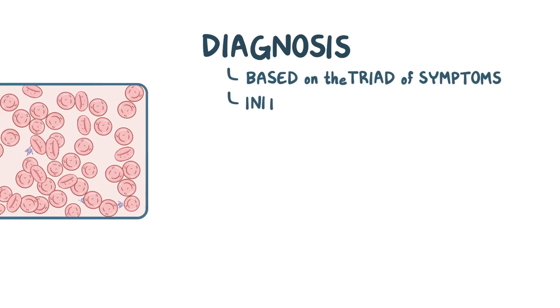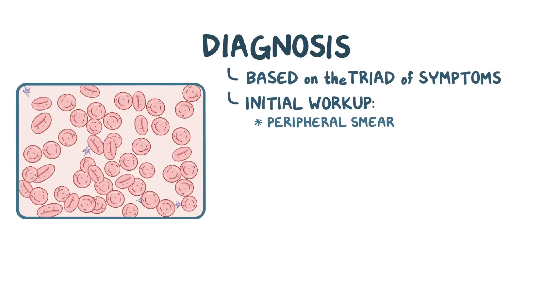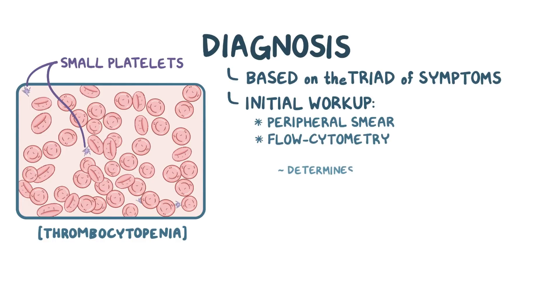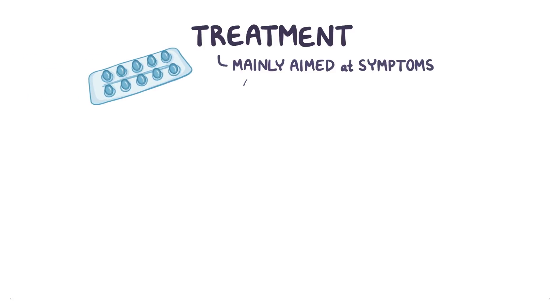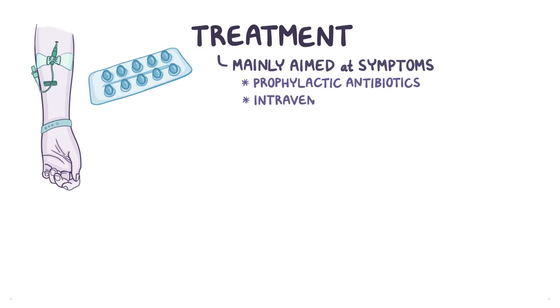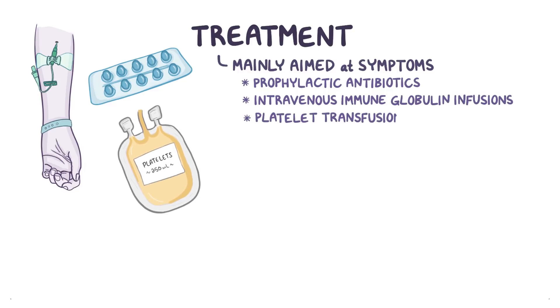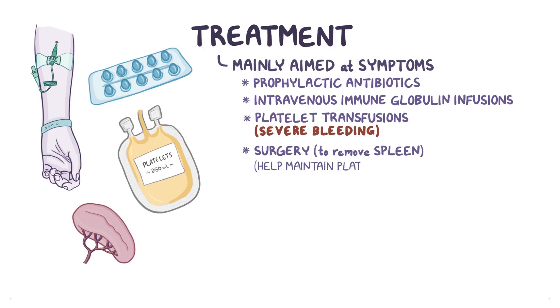The diagnosis is usually suspected based on the triad of symptoms. The initial workup includes a peripheral smear which would show thrombocytopenia with small platelets. Flow cytometry can be used to determine whether a mutated Wiscott-Aldrich syndrome protein is being produced, though it might not identify a severely mutated protein. The diagnosis is then confirmed by genetic sequence analysis of the Wiscott-Aldrich gene. Treatment is mainly aimed at the symptoms and includes prophylactic antibiotics, regular intravenous immune globulin infusions, platelet transfusions in the case of severe bleeding, and potentially surgery to remove the spleen which can help to maintain platelet counts within the blood.